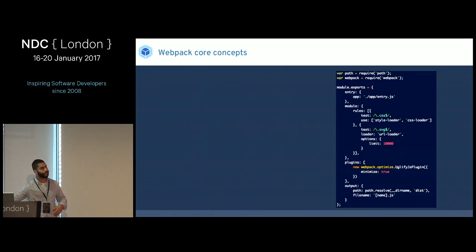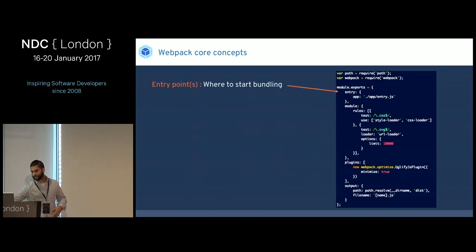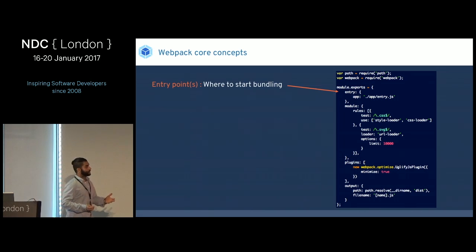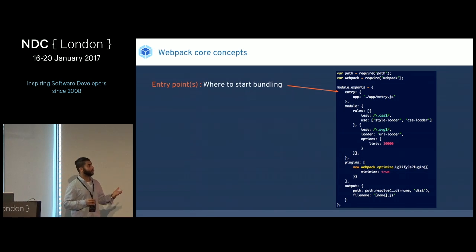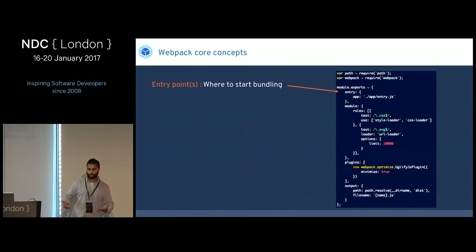On the right we have a simple Webpack config. The first concept is the entry point — the way to start bundling and building the dependency graph. You can have multiple entry points, but in many cases you just have one. In your own application that would be the first file that kicks off the app, like a bootstrap.js or an app.js.